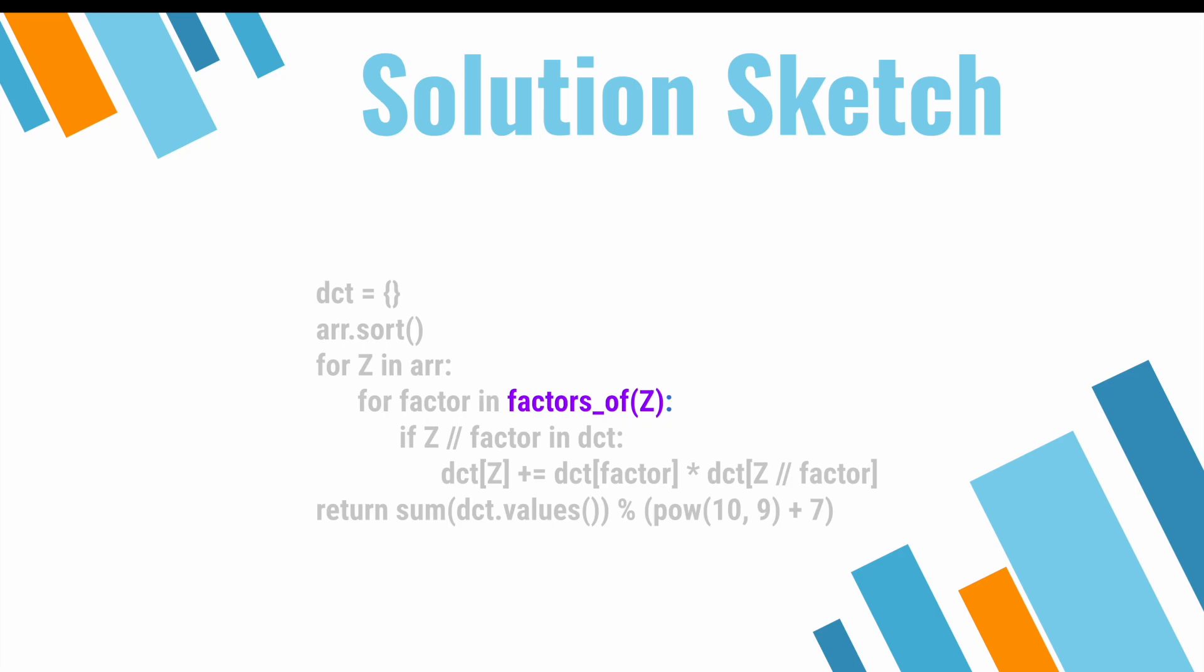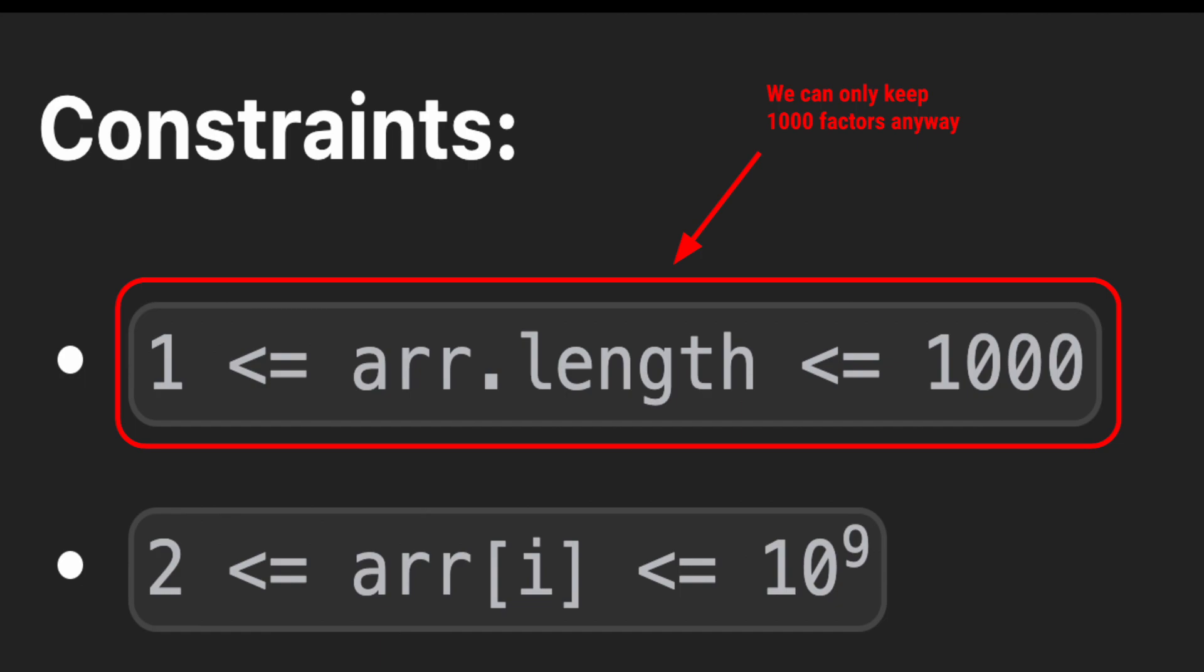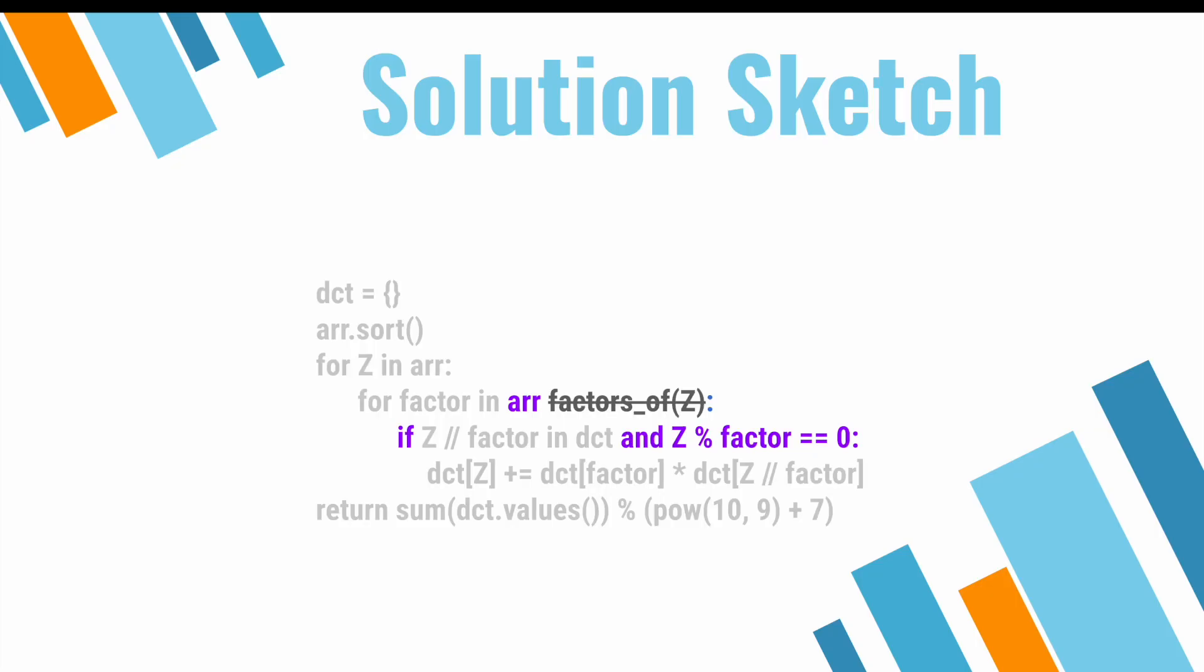Okay, so up until now, I've neglected to explain how we're going to gather all the factors for each element. This is not a trivial task to do efficiently. How might we do it? Well, we alluded to it earlier in the first faulty approach. Since the length of the list is only 1000, we can just iterate through all numbers in the array and see whether they evenly divide the current element.